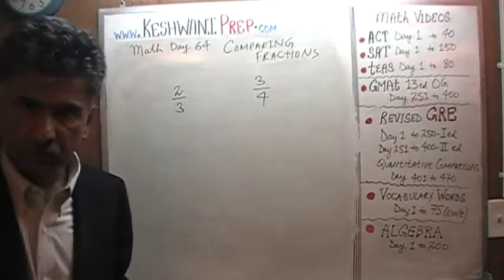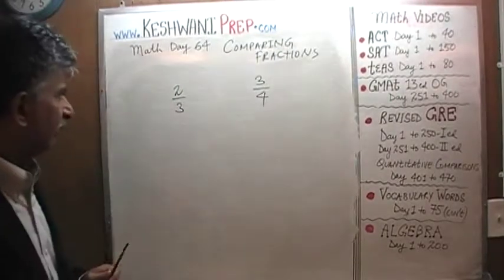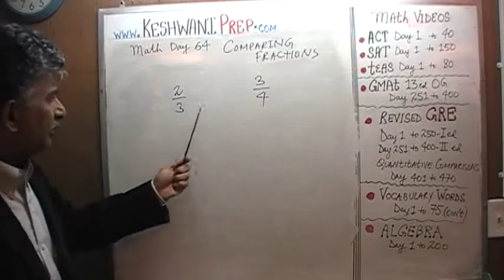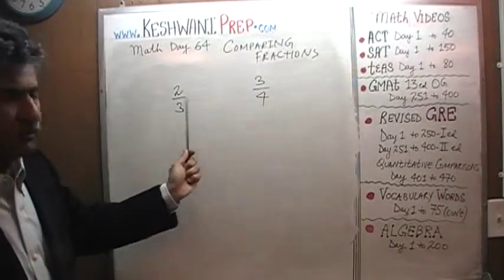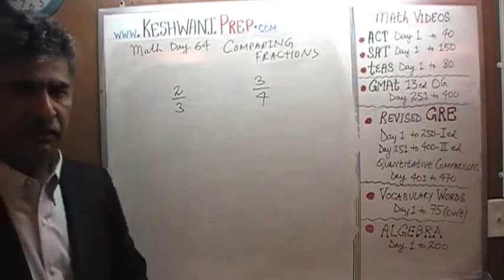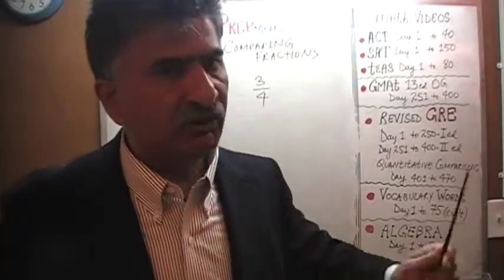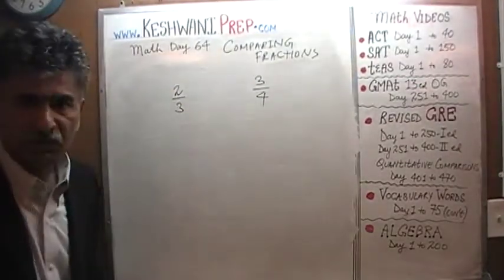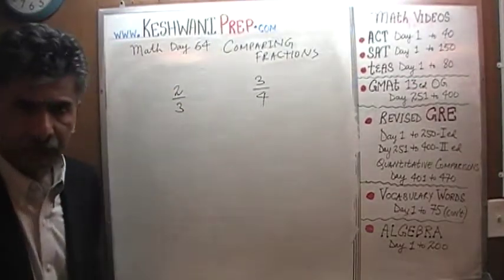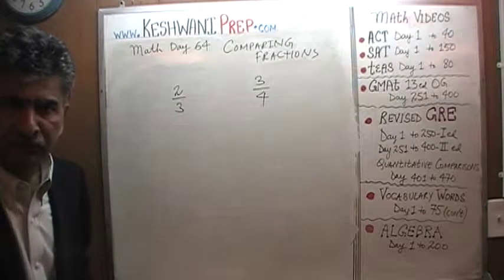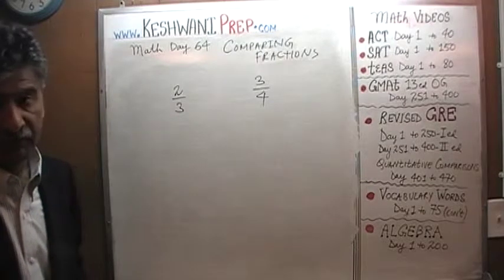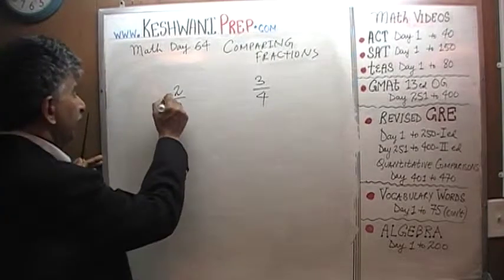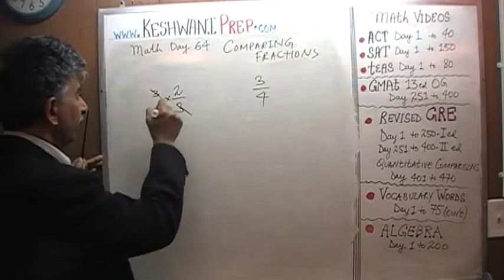We already know the answer is three-quarters, but let's see what we can do here. When we are comparing fractions, our job is to simply get rid of the bottom part — the denominator — as quickly as possible. If there is no denominator, then we are essentially comparing two numbers, which is very simple. The question is: how do we get rid of this three from the bottom?